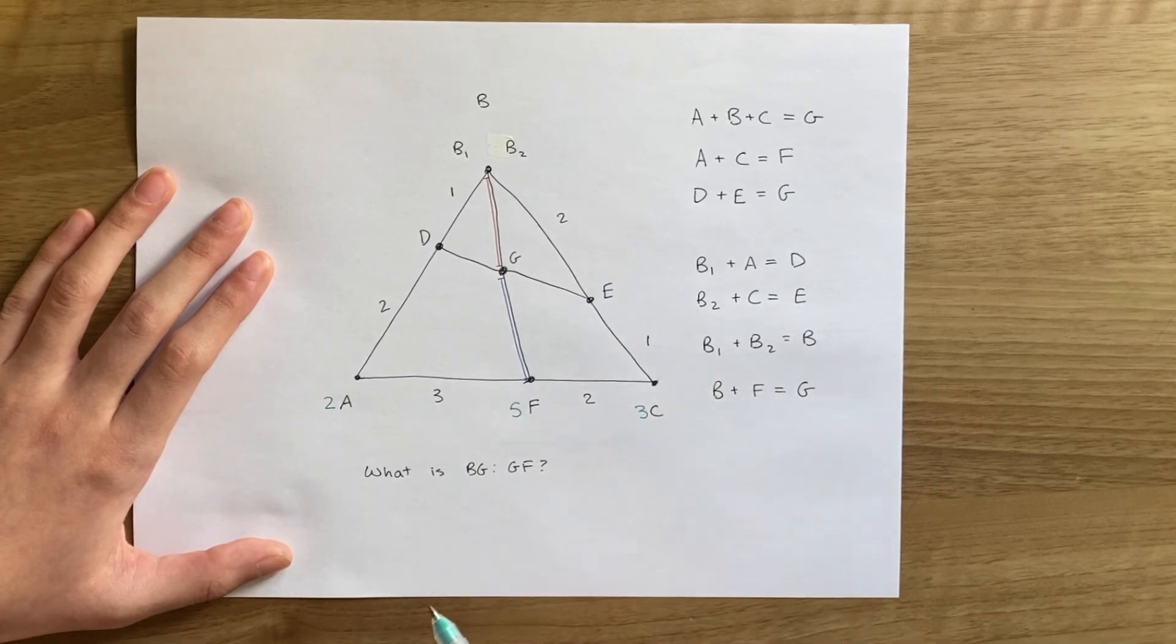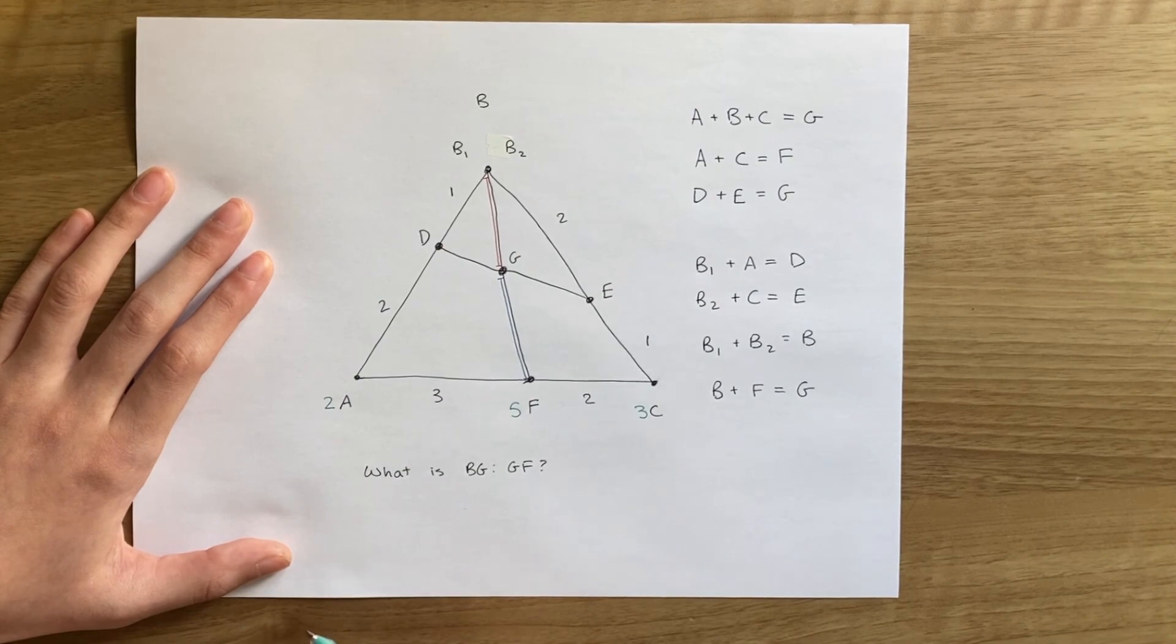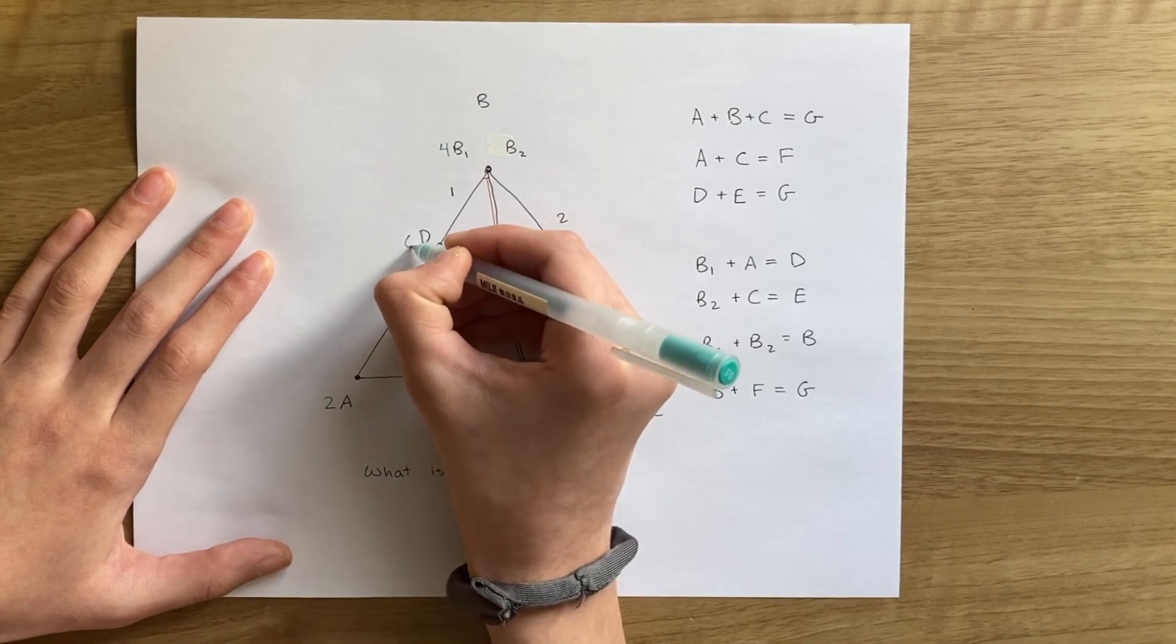Now since D is the center of A and B1, B must have twice the mass of A, so it has a mass of 4. This means D has a mass of 2 plus 4, which is 6.